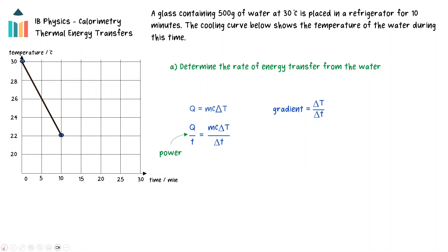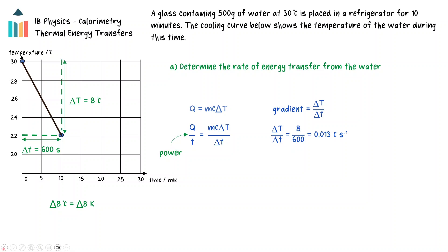Using the first and last points of the line, we can find that the change in temperature is 8 degrees Celsius and the time period is 10 minutes, or 600 seconds. Note that the magnitudes of the Kelvin and Celsius scales are equal, and since the formula only requires the change in temperature, there is no need to convert Celsius into Kelvin. This gives a gradient of 0.013 degrees Celsius per second. Substituting the remaining values gives a rate of energy transfer of 27 watts.